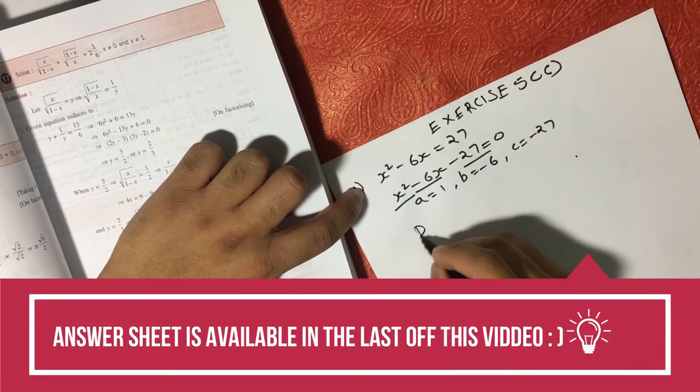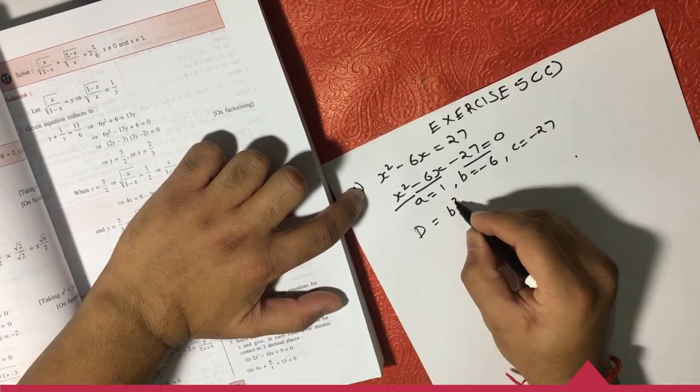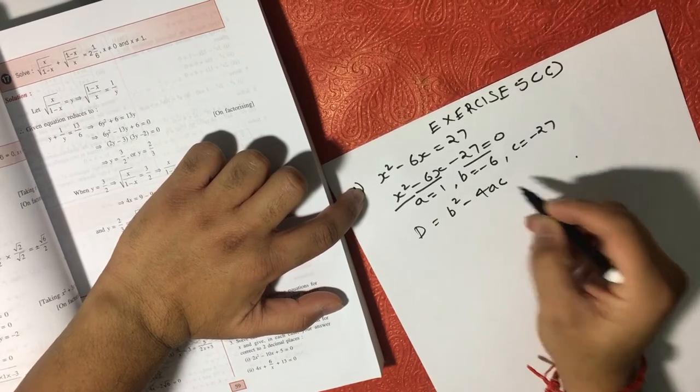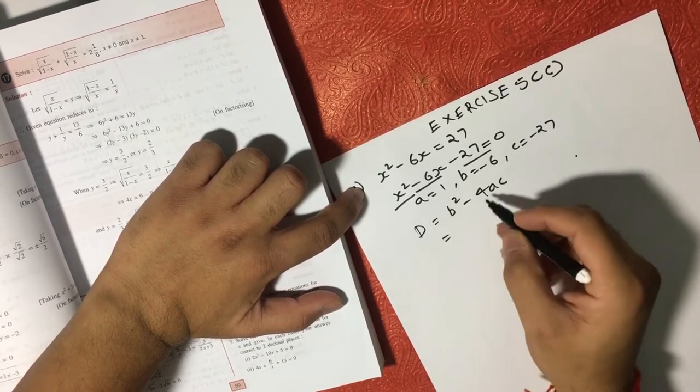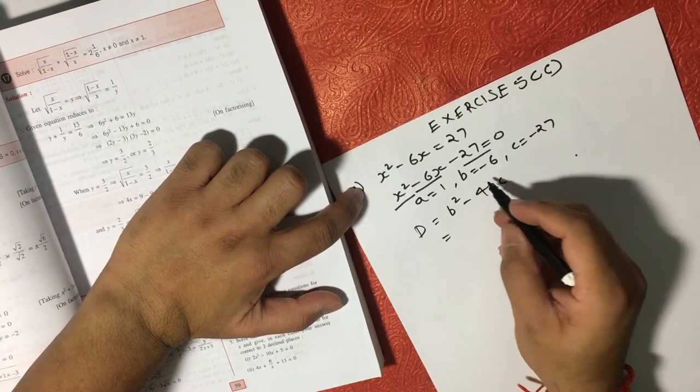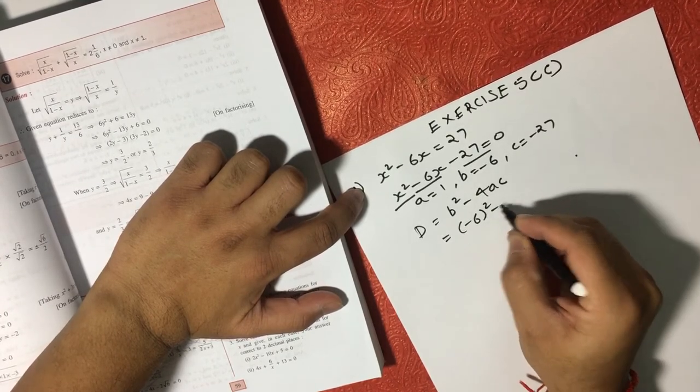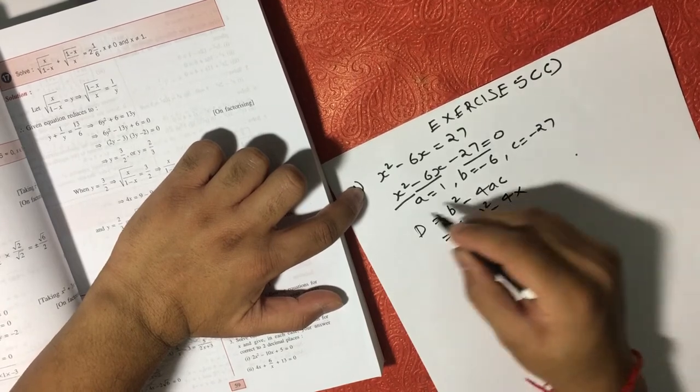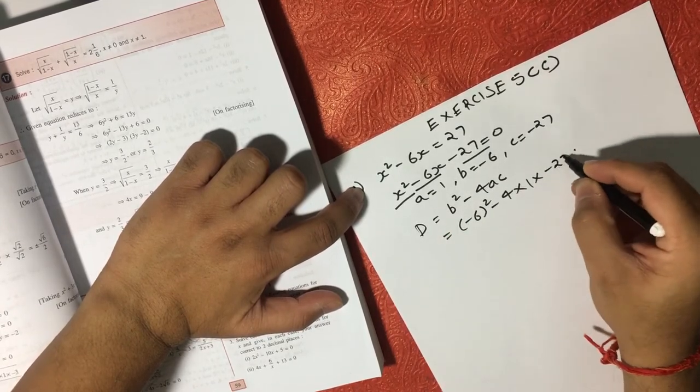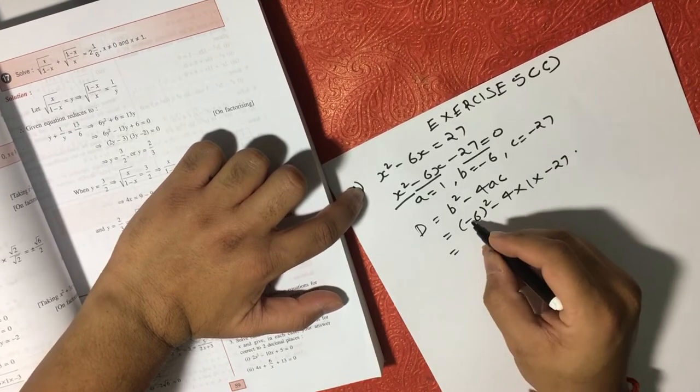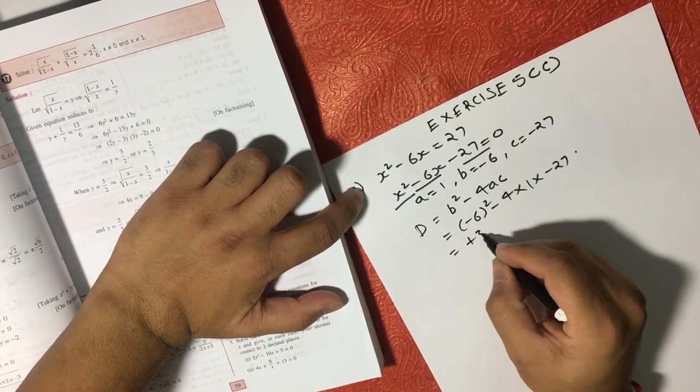Now we have a formula, B square minus 4AC. So if we put the value here, B is minus 6, so that will become minus 6 square minus 4 into A is 1 into C is minus 27.